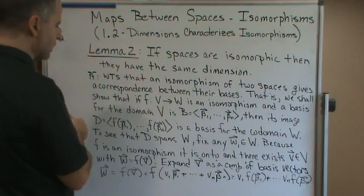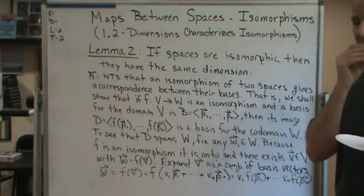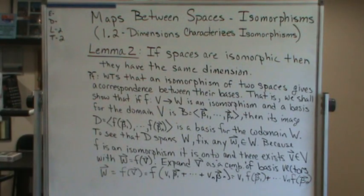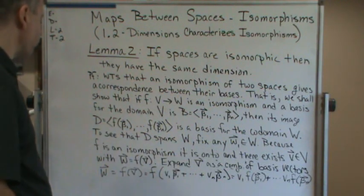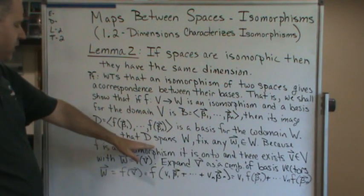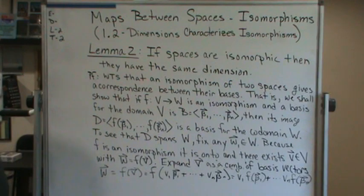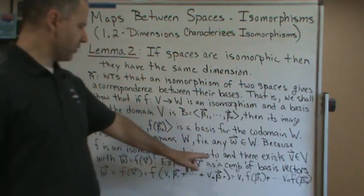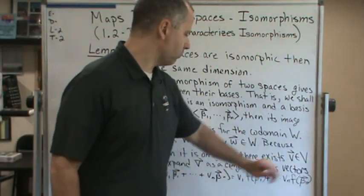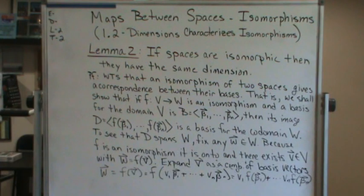To see that D spans W, remember the two things we've got to show: that it spans, and that it's linearly independent. To see that D spans W, we're going to fix any vector w in the vector space W. Because F is an isomorphism, it is onto, and there exists a vector in V such that w is equal to F of v.